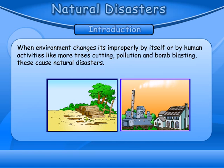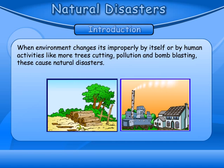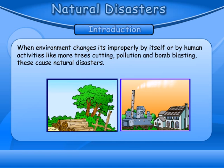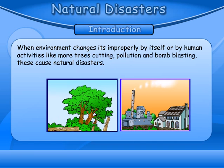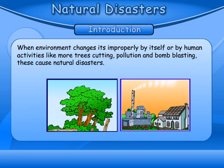Introduction: When the environment changes improperly by itself or by human activities like cutting more trees, pollution, and bomb blasting, these cause natural disasters.